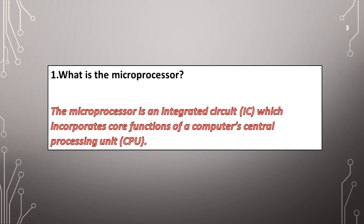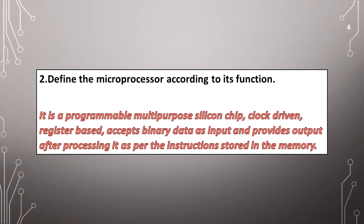What is the microprocessor? The microprocessor is an integrated circuit which incorporates core functions of a computer central processing unit. It is a programmable multipurpose silicon chip, clock driven, register based, that accepts binary data as input and provides output after processing it as per the instructions stored in the memory.